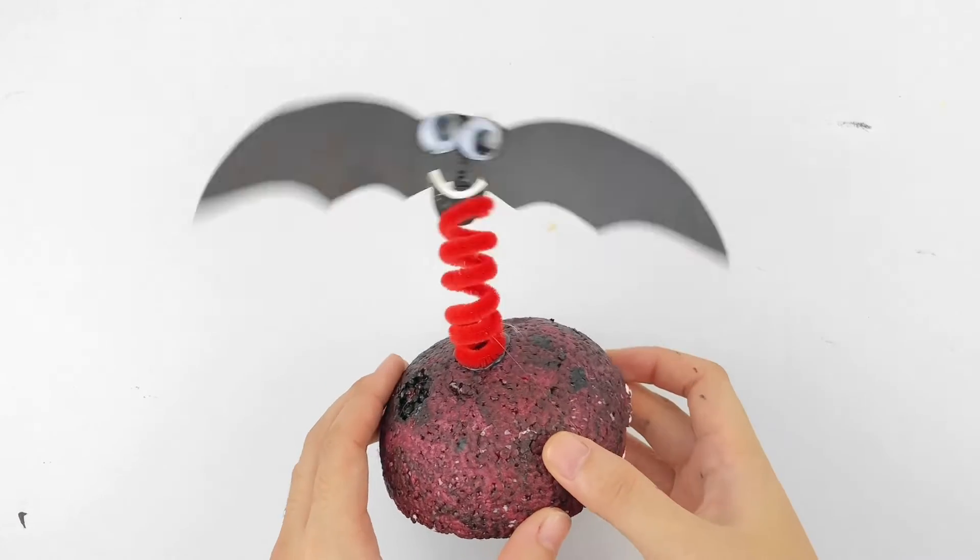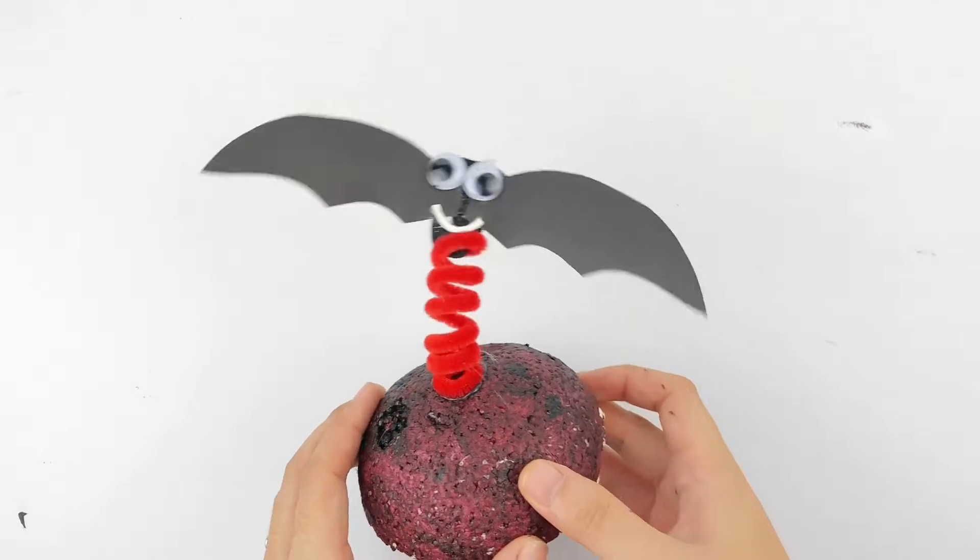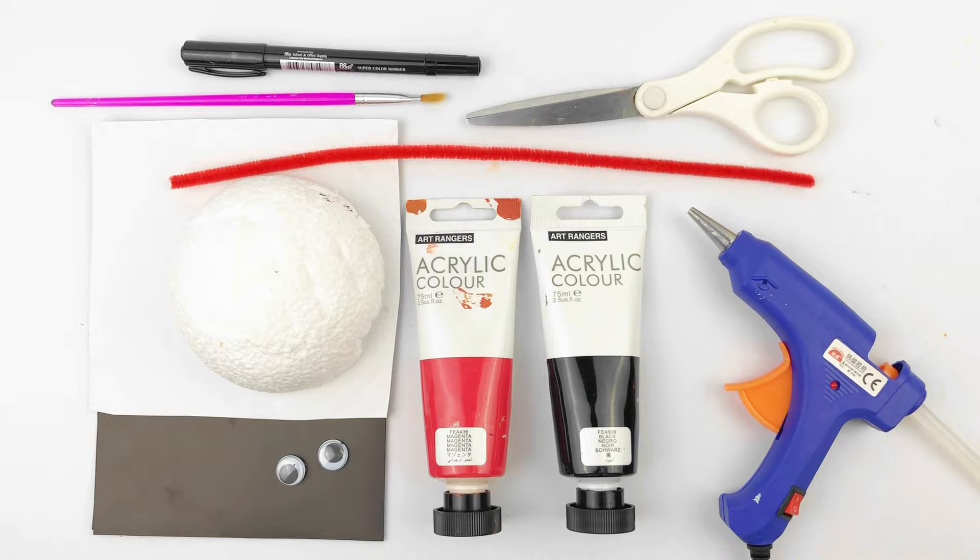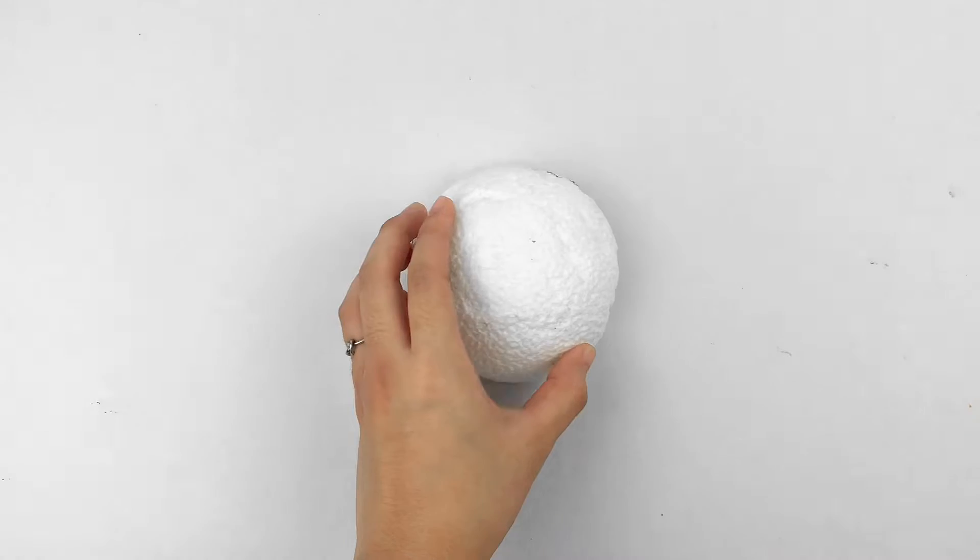Let's make a really cute bouncy bat craft for Halloween. You're going to need some simple materials such as paint, construction paper, and a pipe cleaner.